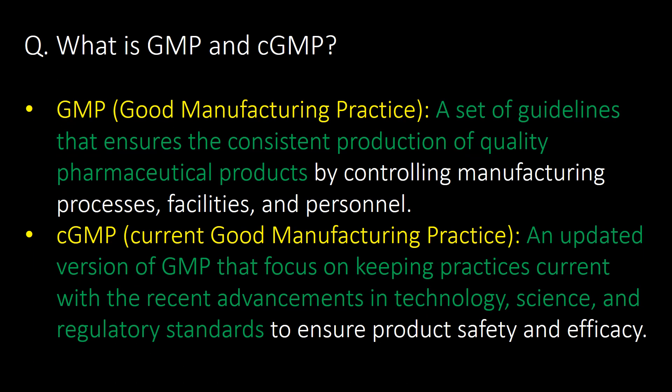What is GMP and CGMP? GMP, that is Good Manufacturing Practice, is a set of guidelines that ensures the consistent production of quality pharmaceutical products by controlling manufacturing processes, facilities and personnel. Whereas CGMP, that is Current Good Manufacturing Practice, is an updated version of GMP that focuses on keeping practices current with recent advancements in technology, science and regulatory standards.